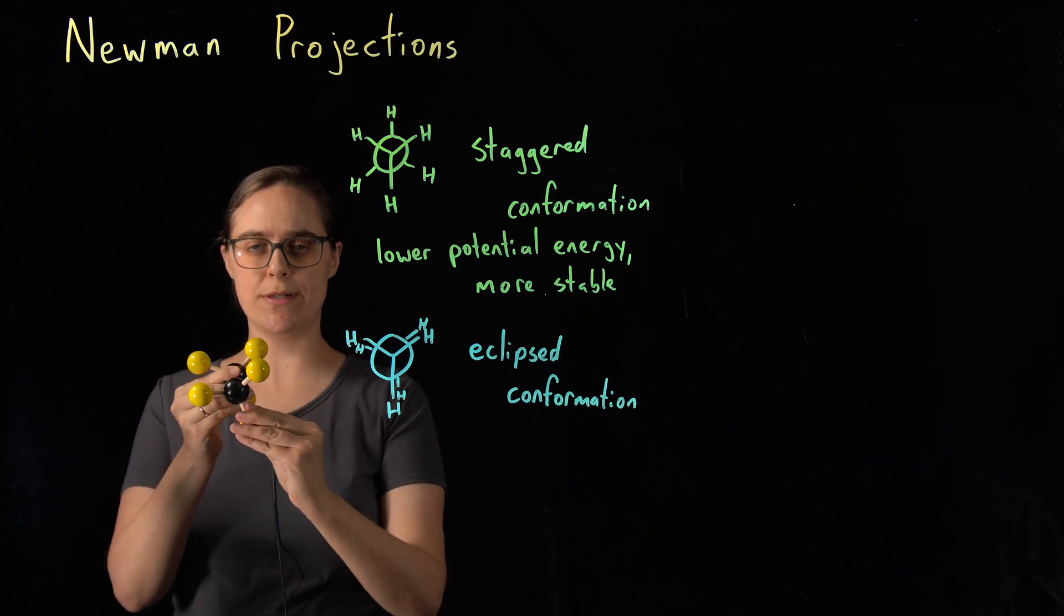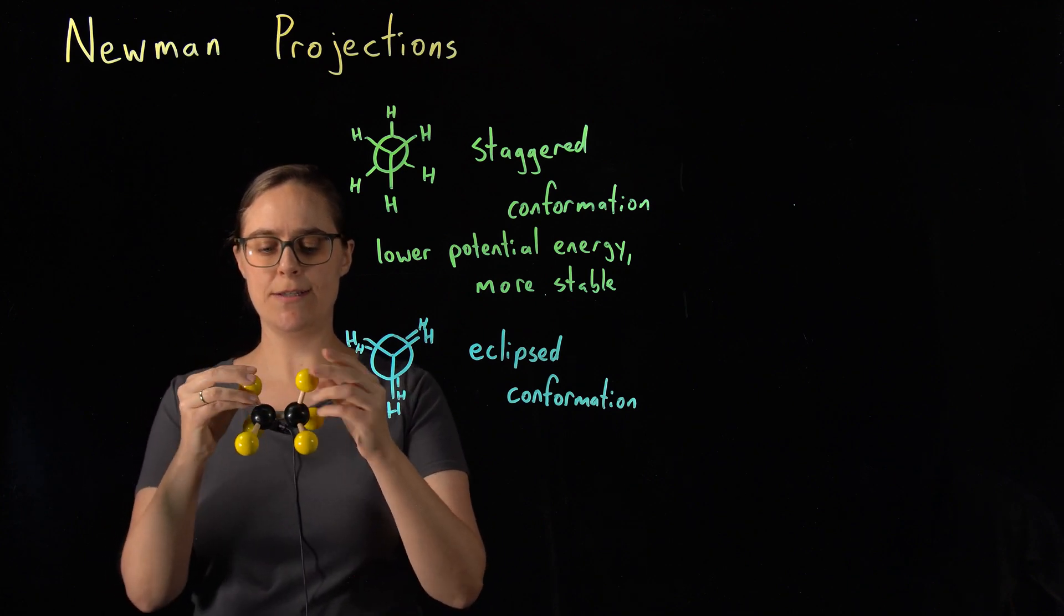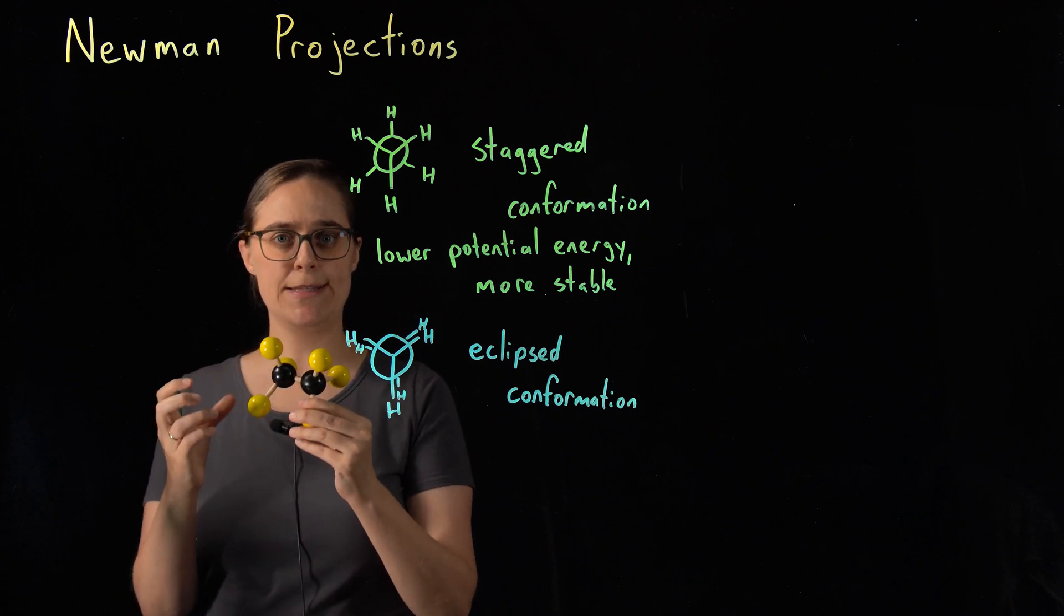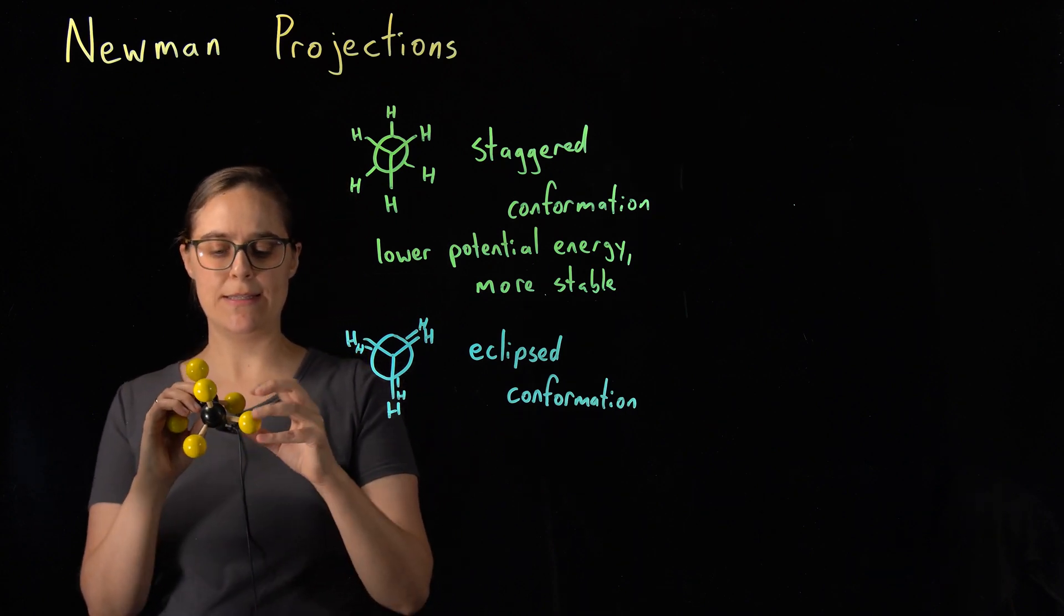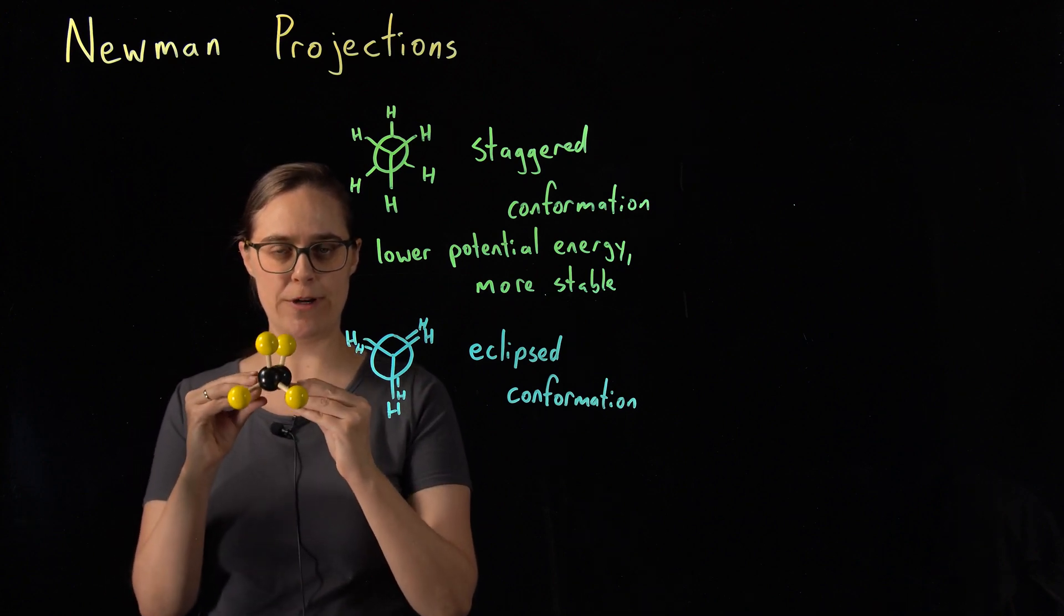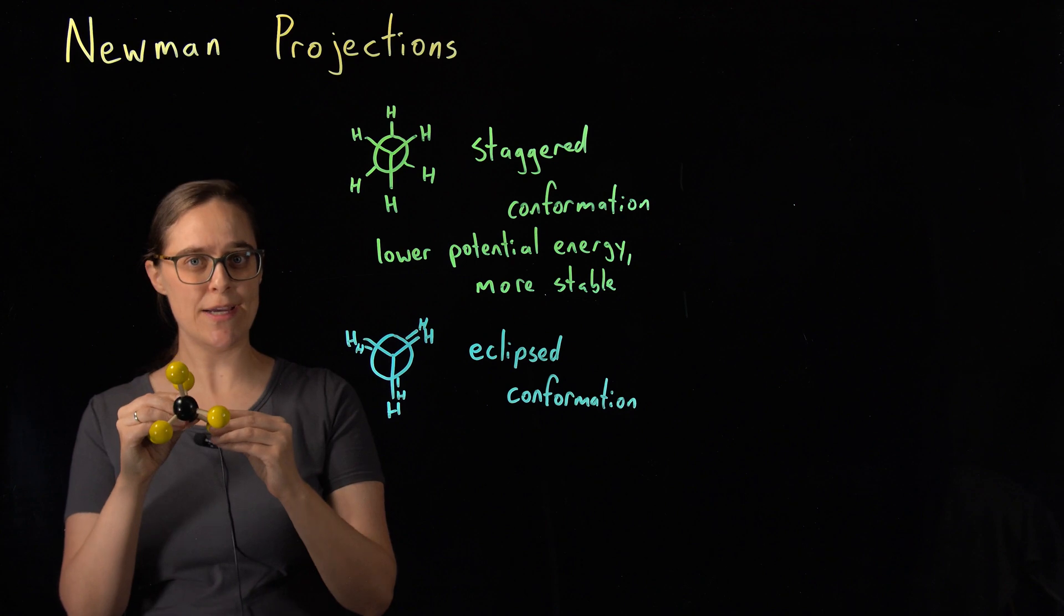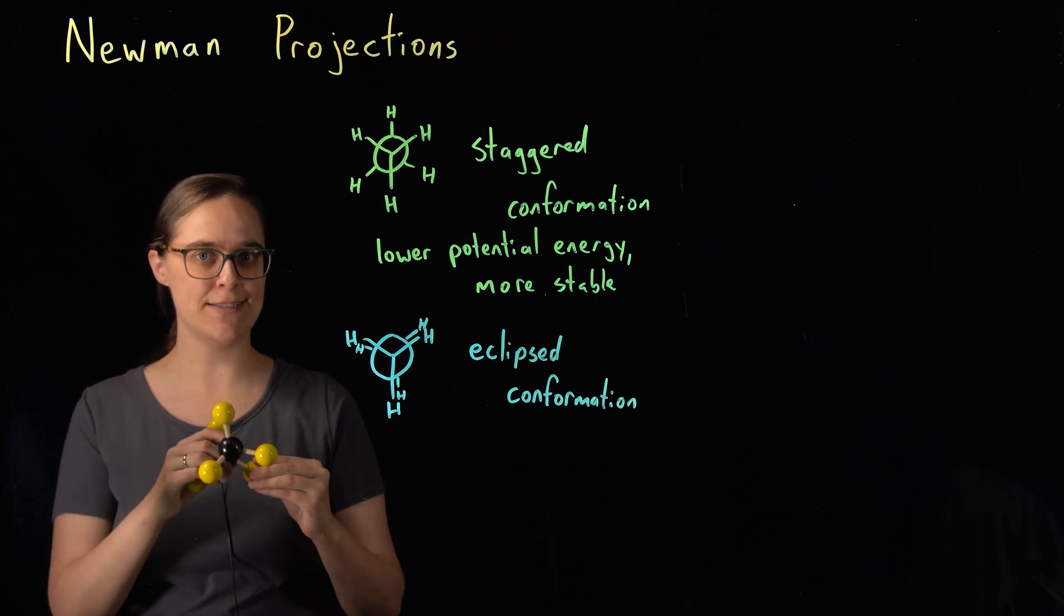Now, in the eclipsed conformation, these hydrogens are now as close to each other as they can possibly be. This makes them unhappy. This requires more energy for a molecule to exist in this conformation. So this is going to be higher potential energy and less stable.